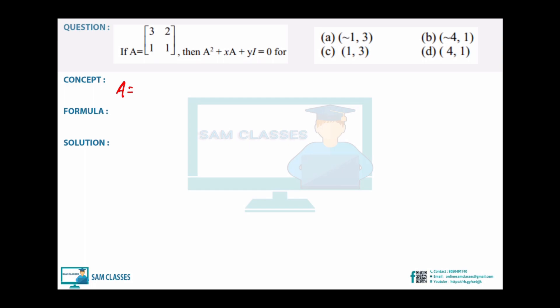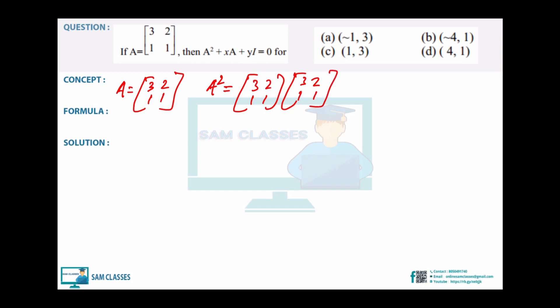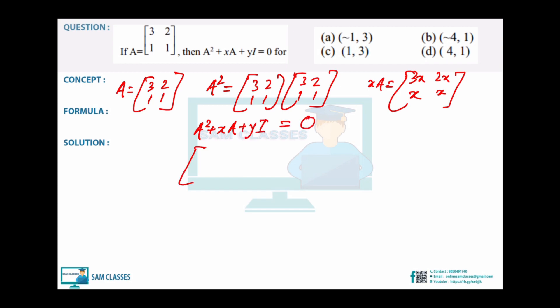Next question — a bit lengthy. Find A² and then apply it. A is given (3×3 matrix). Find A² + xA + yI = 0. Computing A²: first element = 9 + 2 = 11, then other elements — going fast; you can pause if needed. A² = [[11,8],[4,3]].